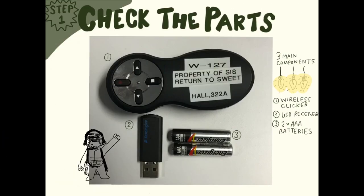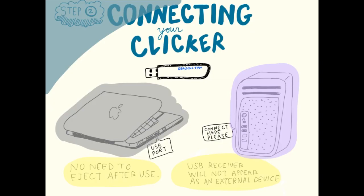Before starting, check to make sure all the necessary components in your clicker are present. Note the USB wireless receiver is hidden inside the posterior end of the clicker. Simply click and pull to remove it, then plug the USB receiver into your computer's USB port.